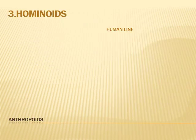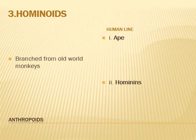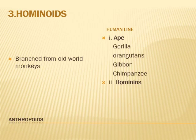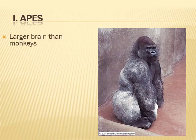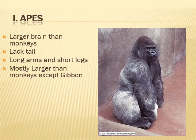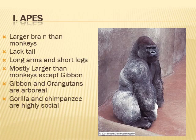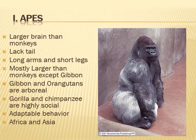The third branch of anthropoids is Hominoids, which originated from Old World monkeys and is considered the human lineage. It diverged into apes and hominins. Apes include gorillas, orangutans, gibbons, and chimpanzees. Apes have larger brains than monkeys, lack tails, have long arms and short legs, and are mostly larger than monkeys except gibbons. Gibbons and orangutans are arboreal, while gorillas and chimpanzees are highly social with adaptable behavior and are found in Africa and Asia.